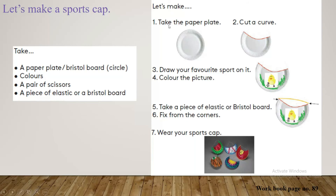Let's read these steps. First step: paint the paper plate. You can easily find this paper plate. Second step: cut a curve. Look at the picture — you have to cut a curve like this. Now this step: draw your favorite sport on it. Look at this picture. You can draw your favorite sport — football, volleyball, a ball like this.